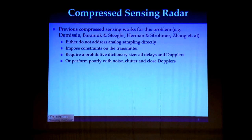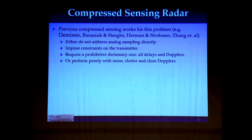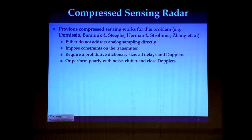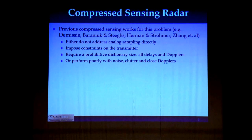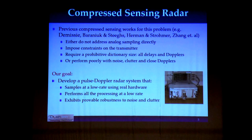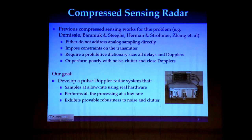We're not the first ones to try to do this. Previous approaches have suffered from one or more of the following problems: either they do not actually attempt to decrease sample rate below Nyquist, they have various constraints on transmitted waveforms, they require infeasible processing which simply doesn't work for any standard size problems, or they are not very good with noise. Our method actually addresses all these problems — it samples and processes the signal at a low rate, and it has very good performance with noise and other distortions.